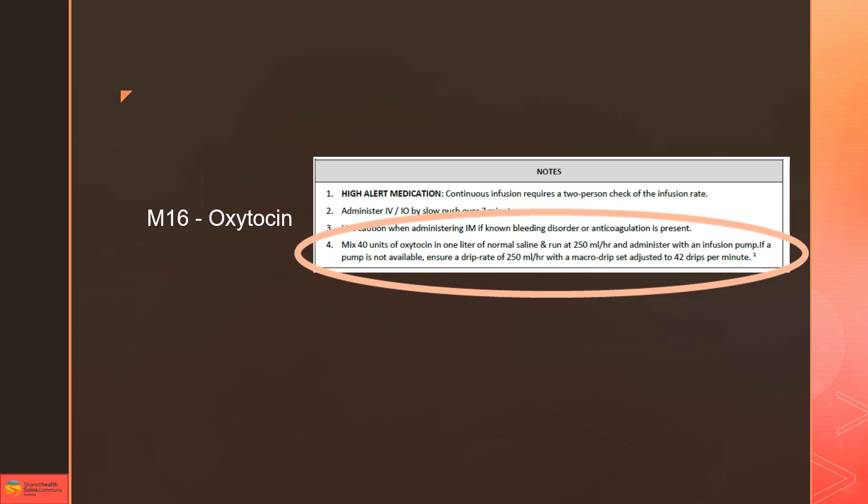We don't have pumps on the truck yet, so as a pump is not available, it says to ensure a drip rate of 250 mls an hour with a macro drip set adjusted to 42 drips per minute.